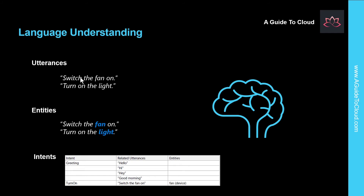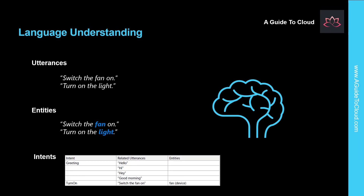An utterance is an example of something a user might say that your application must interpret. For example, when using a home automation system, a user might say 'switch the fan on' or 'turn on the light.' An entity is an item to which an utterance refers — for example, a fan or a light. An intent represents the purpose or goal expressed in a user's utterance — for example, for both those utterances the intent is to turn a device on. So in your language understanding application, you might define a 'turn on' intent that is related to these utterances.